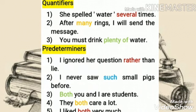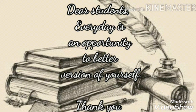That last category — predeterminers. Examples: 'I ignored her questions rather than lie.' 'I never saw such small pigs before.' 'Both you and I are students.' 'They both care a lot.' 'I liked both very much.' Here, 'rather,' 'such,' and 'both' are predeterminers. Try to watch this video once or twice carefully, and write some examples yourself — it will help you to better understand this concept. I hope you all know more about grammar. Thank you.